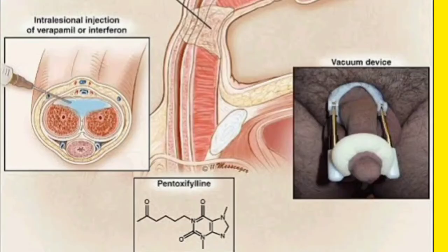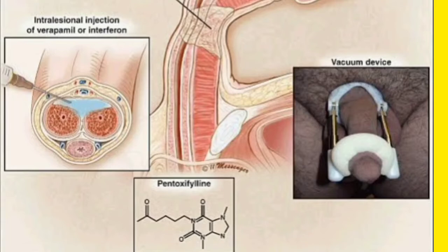Now let us see how these patients are managed. Generally we give intralesional injections — we inject directly into the plaque. We can use either verapamil or interferon as intralesional injections. When the case is severe and cannot be managed by injection, we go for surgery. Sometimes a vacuum device is also used.